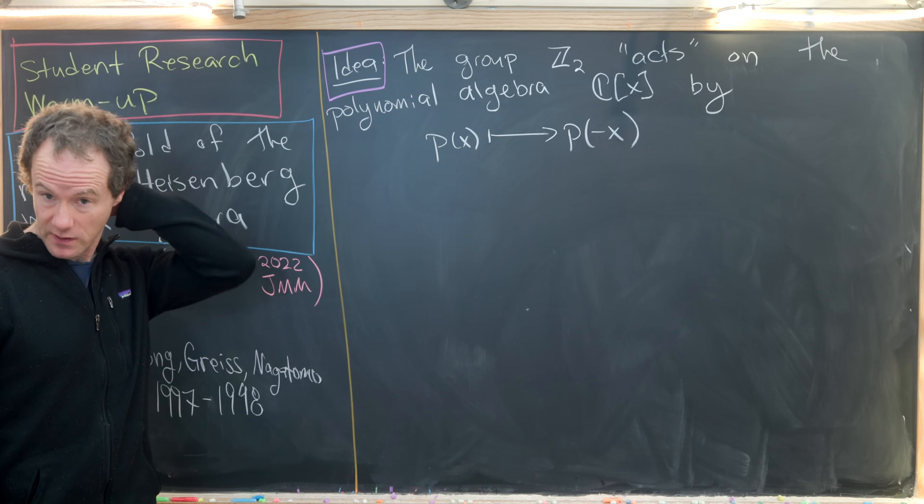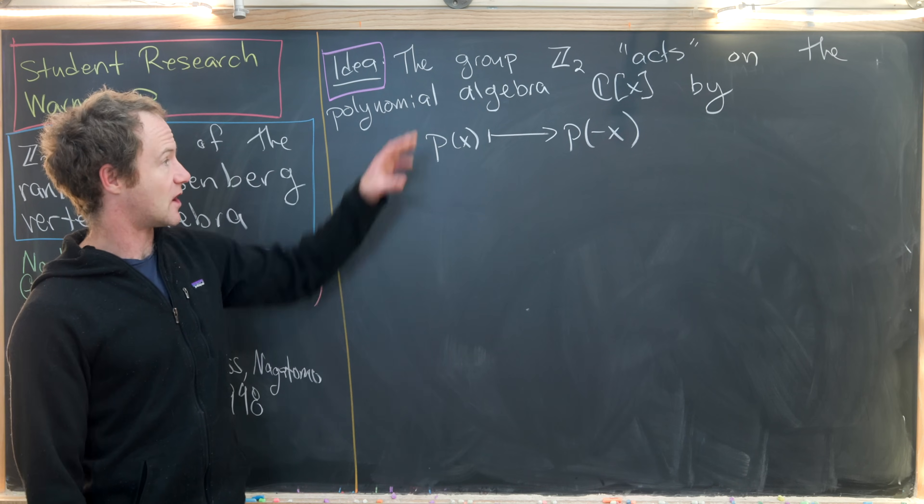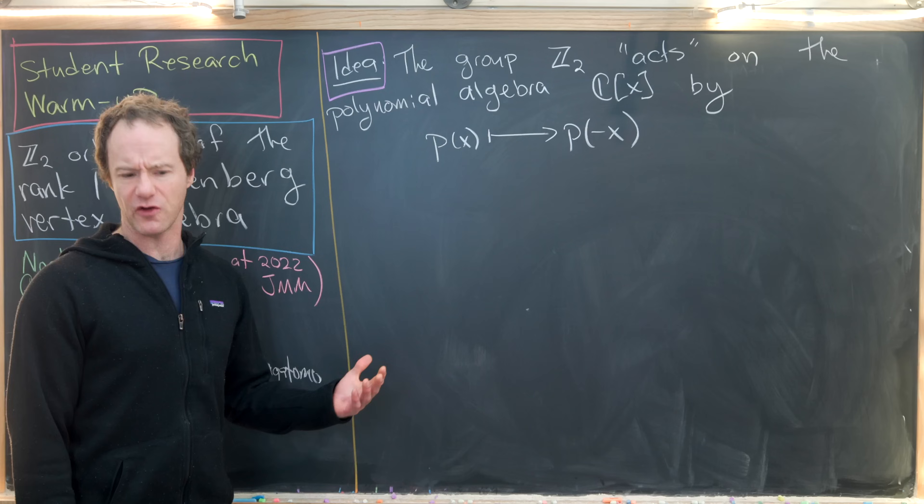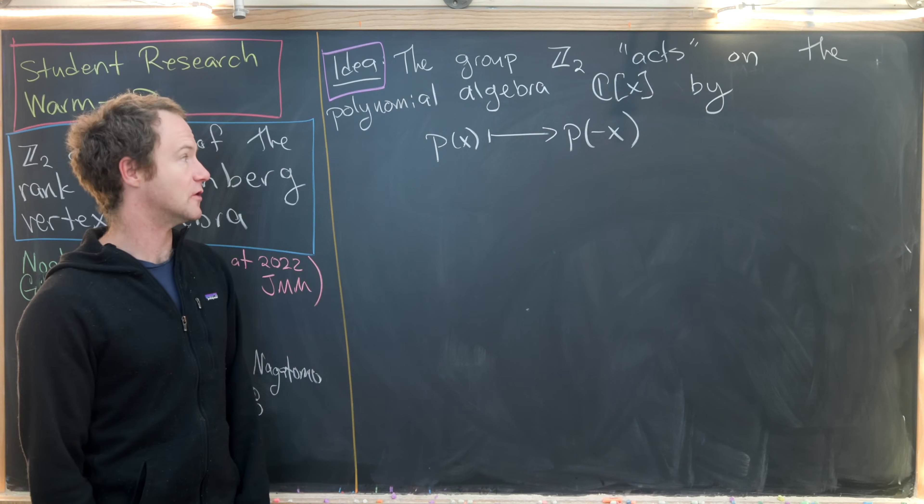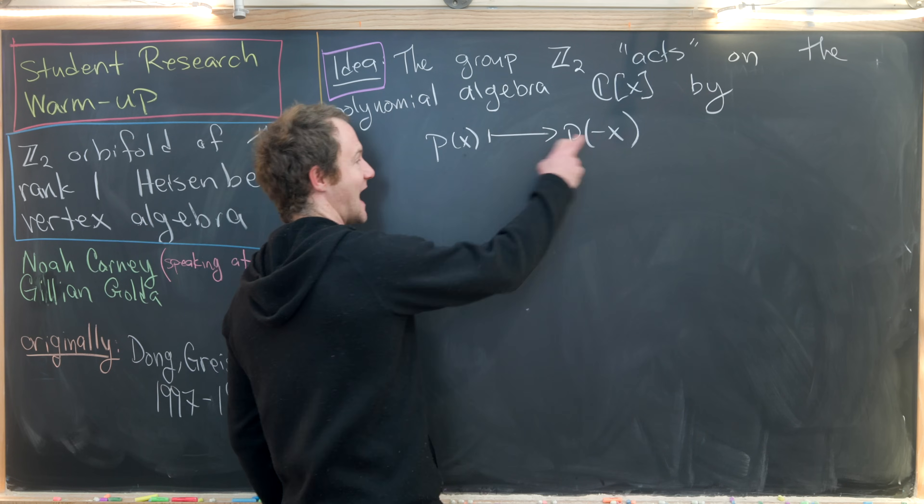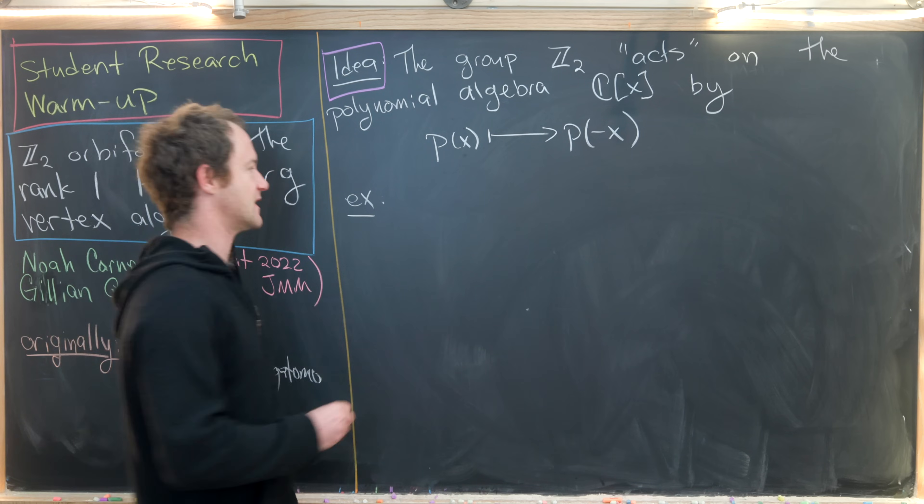The group Z2 acts on the polynomial algebra C[X], in other words polynomials with a single variable, by taking the polynomial and exchanging X for minus X. Let's look at a couple of examples of that.